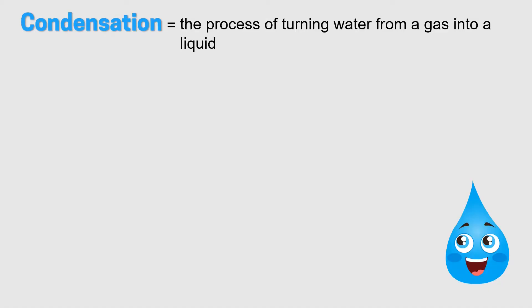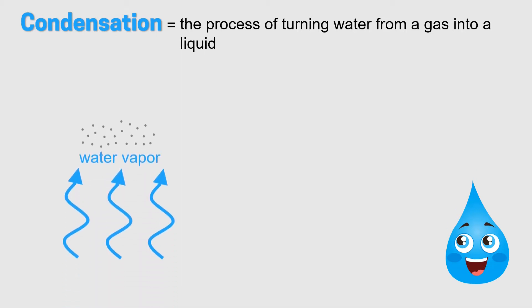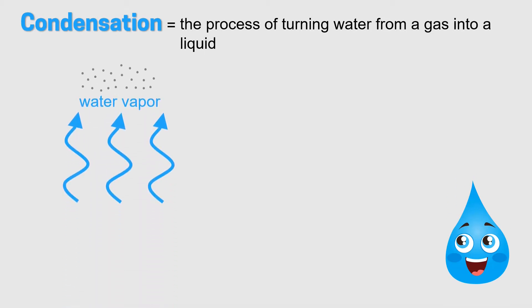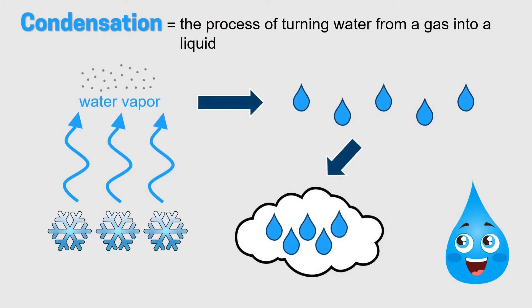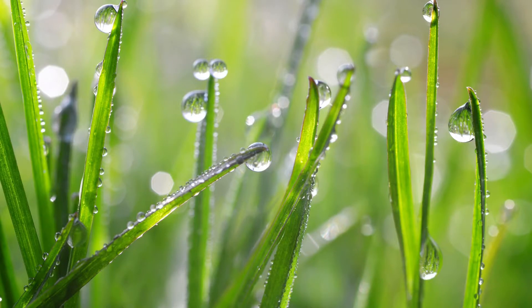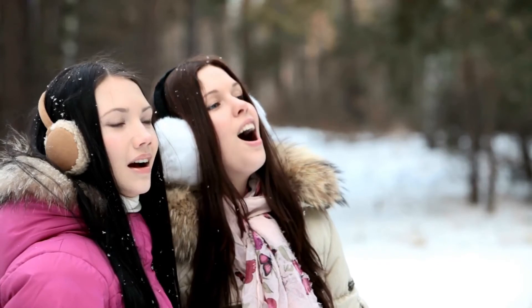Second is condensation. As evaporated water vapor rises up high into the sky, it becomes cooler. Once it gets cold enough, the water vapor turns back into liquid water droplets, which join together to form clouds. This process is called condensation and it's the opposite of evaporation. You've probably seen condensation in your everyday life — maybe drops of water called dew on the grass in your front lawn in the morning, or you've been able to see your breath outside on a very cold day. This is condensation at work.